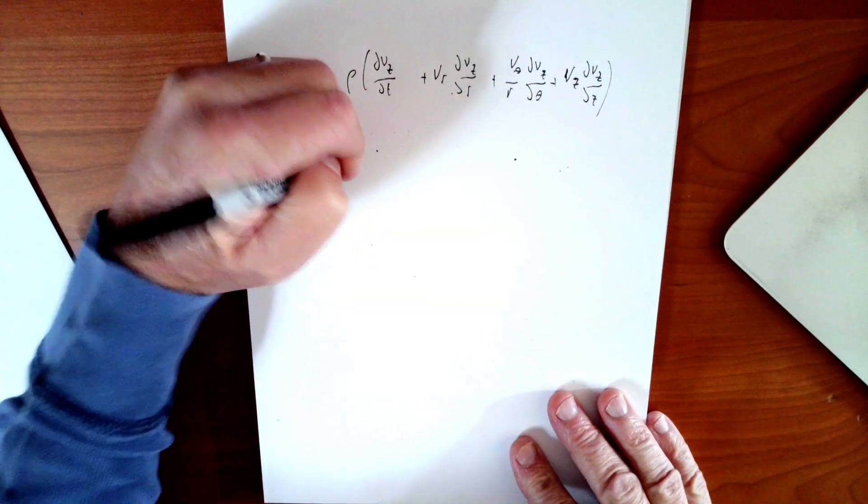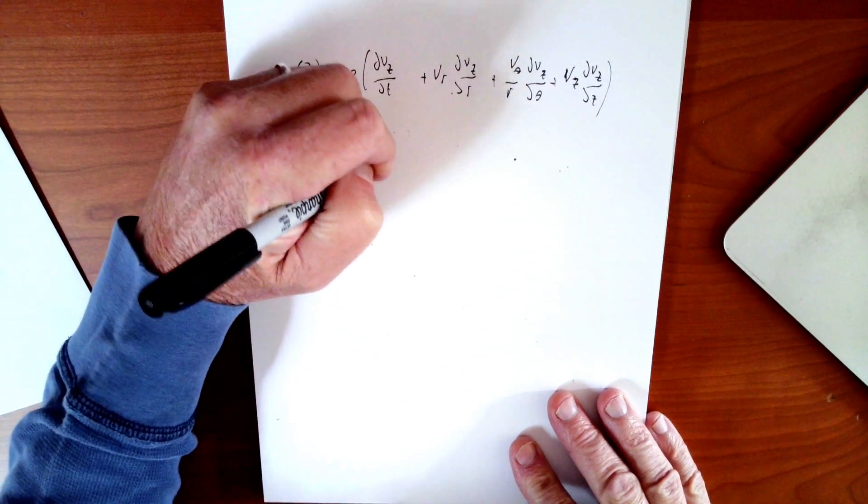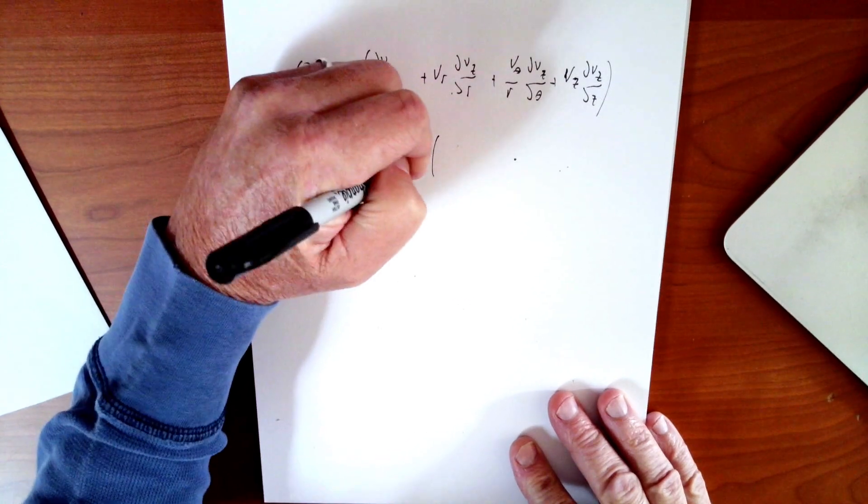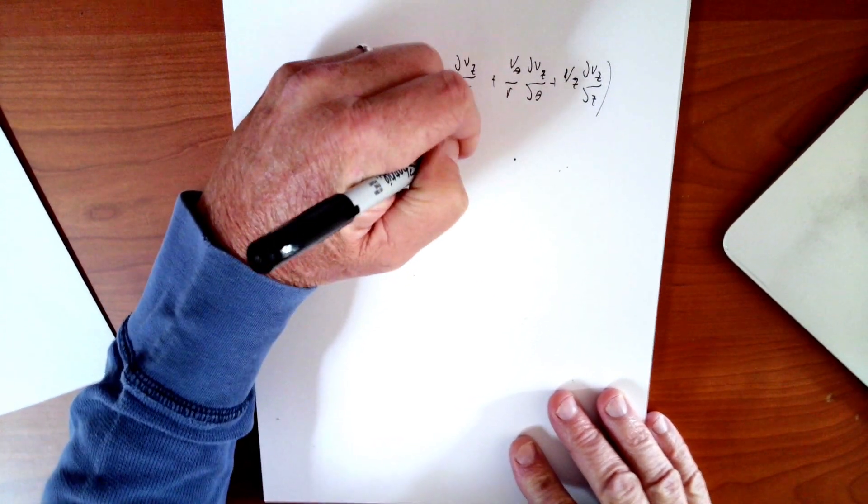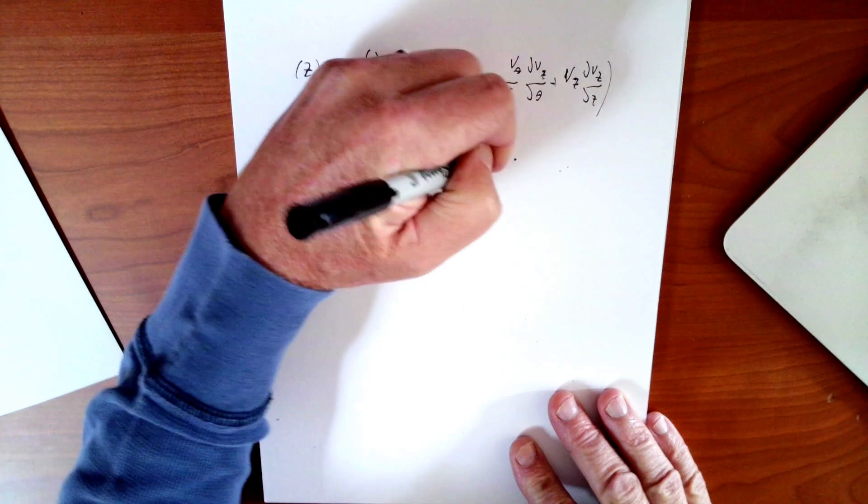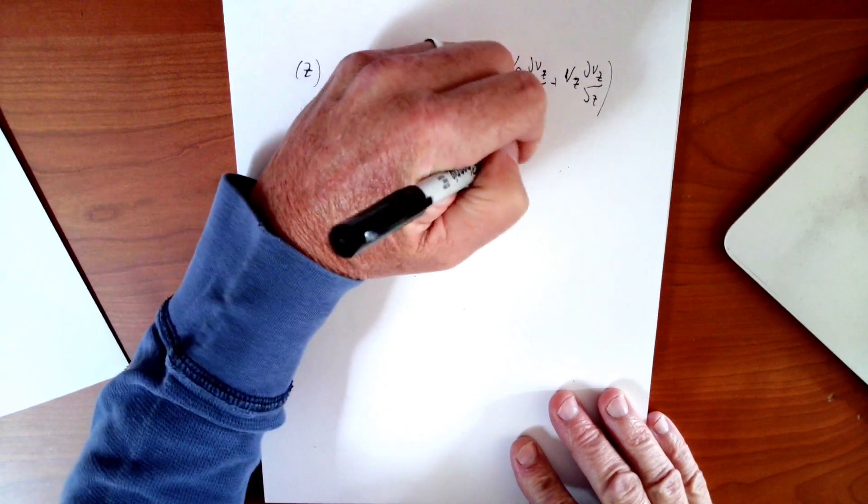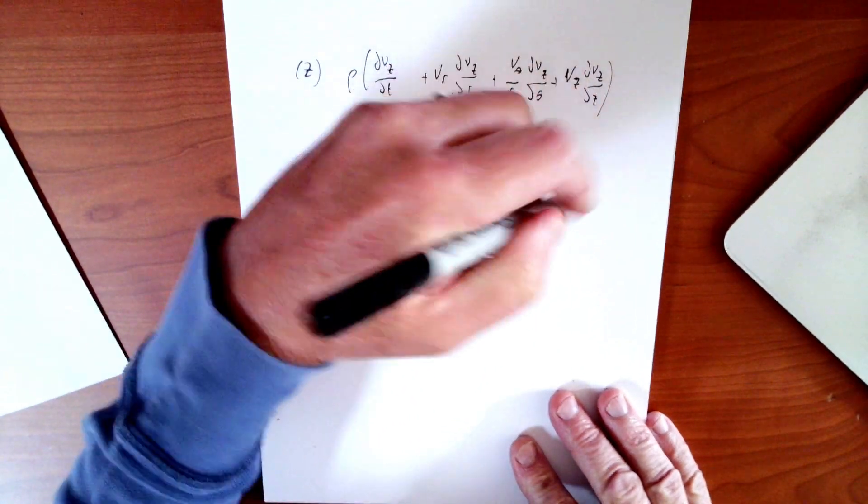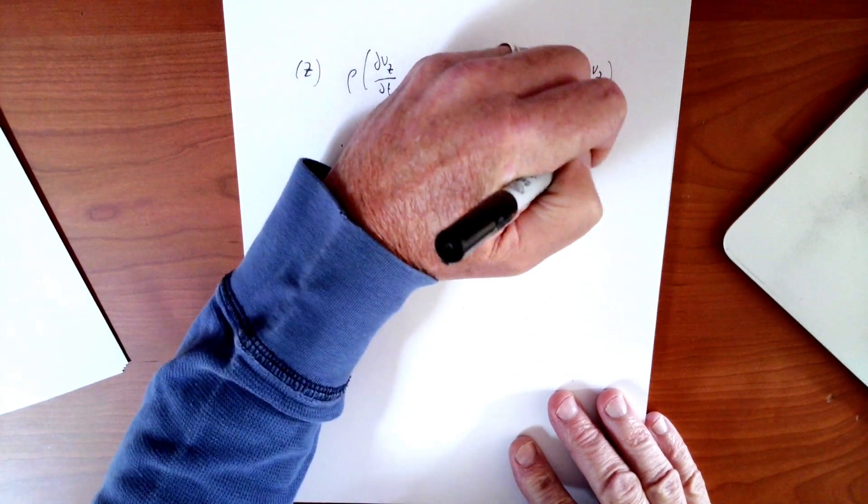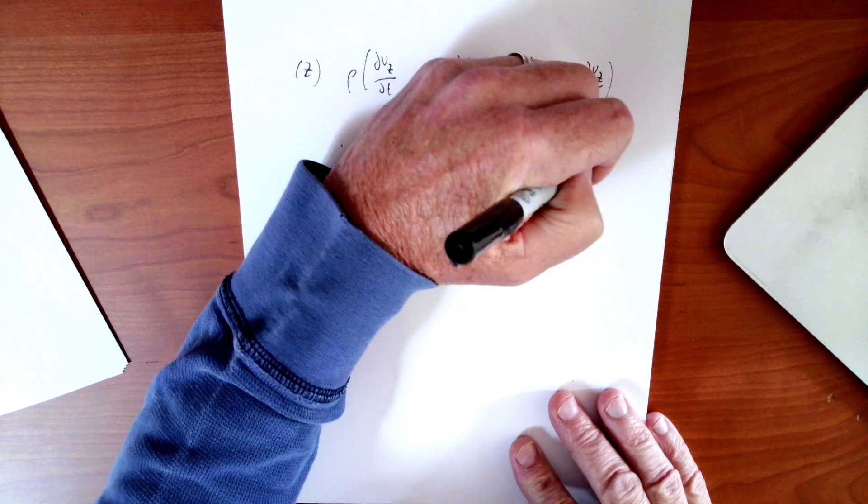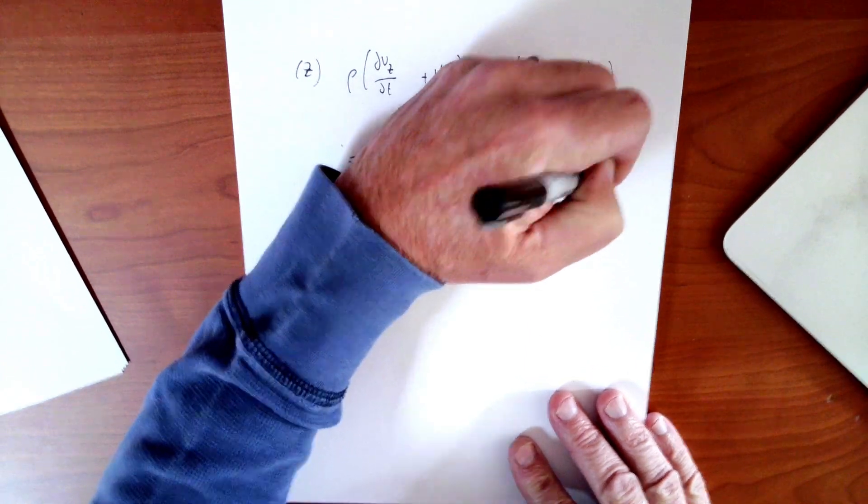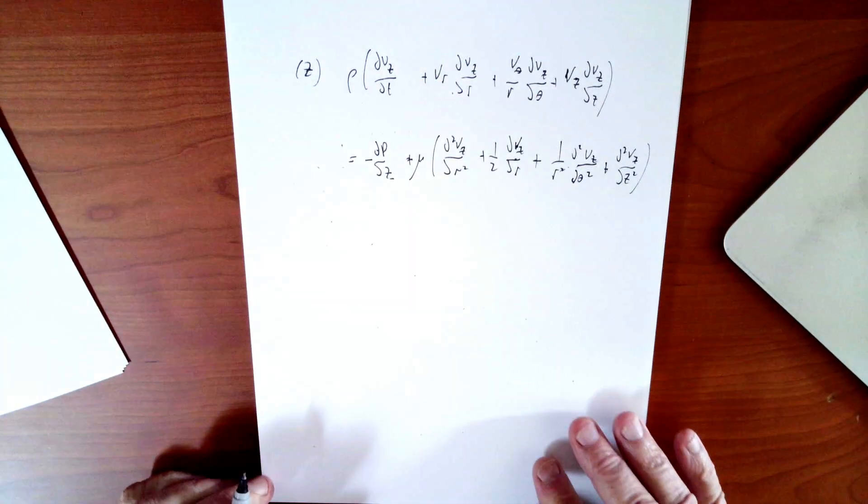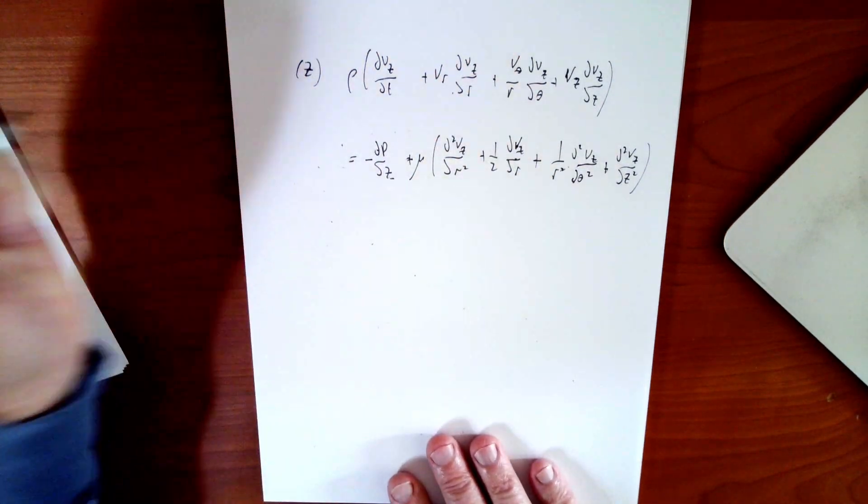Then that's all equal to the expected minus dp/dz, at least hoping you expect that at this point, plus the viscosity term: d squared vz/dr squared plus one over r dvz/dr plus one over r squared times d squared vz/d theta squared plus d squared vz/dz squared. All right, so that's our z equation, our z momentum equation.